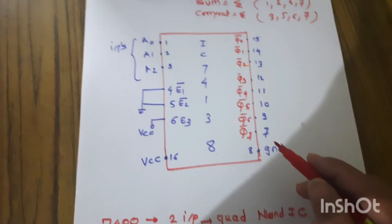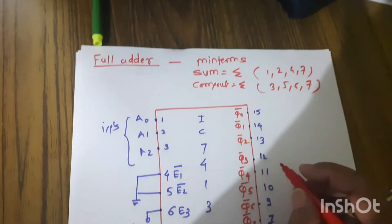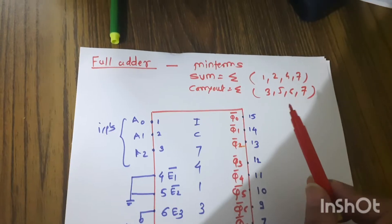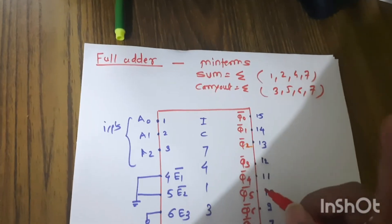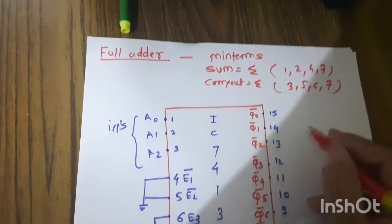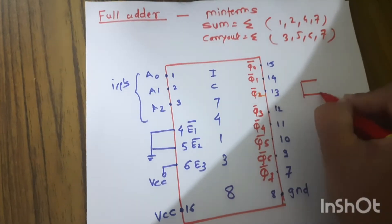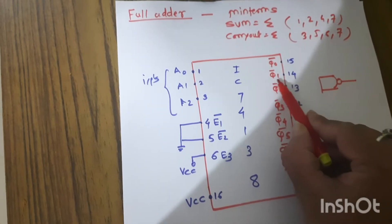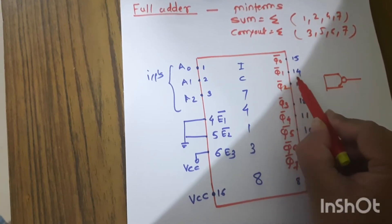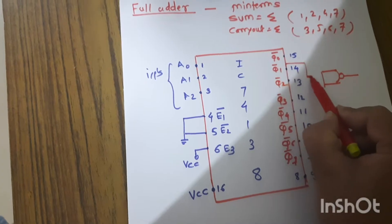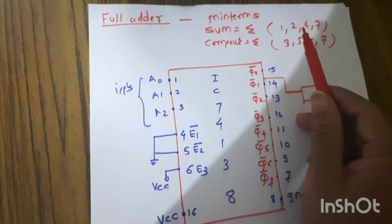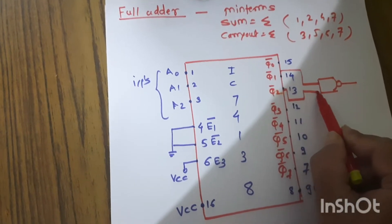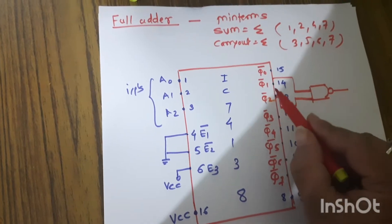For the sum, the min terms are 1, 2, 4, and 7. Take the first NAND gate and connect min terms 1 and 2. Min term 1 is Q1, which is connected to pin number 14, so connect Q1 to the first input of the NAND gate. Min term 2 is Q2, which is pin number 13, connected to the second input of the NAND gate.